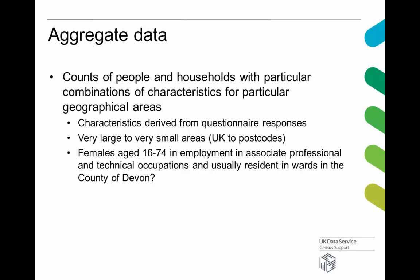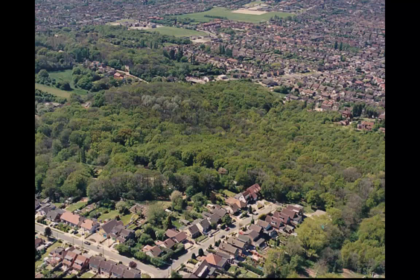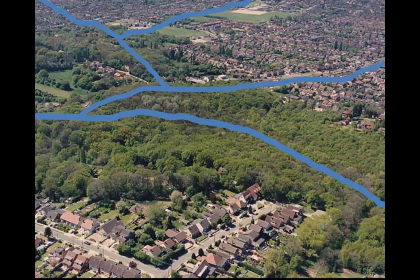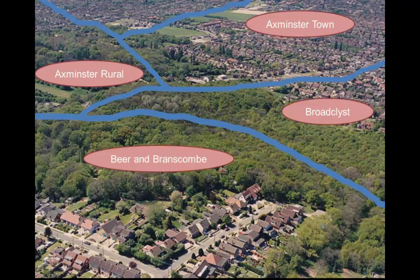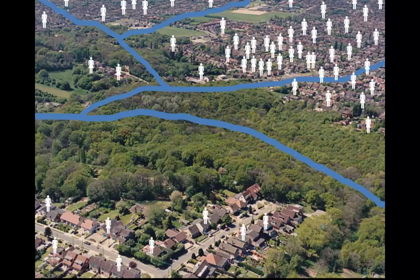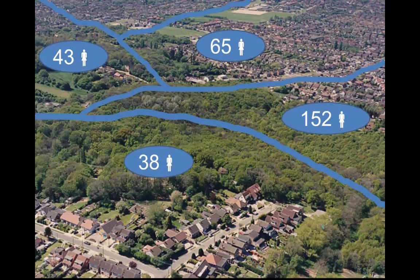An example of what aggregate data is could be the number of females aged 16 to 74 in employment in associate professional technical occupations, and usually residents in wards in the county of Devon. If you look at a country carved up into lots of areas — these would be the boundaries, such as wards — each area has a name. You count people with particular characteristics in that area, so there might be 43 people in one area with a certain attribute, allowing comparison across areas.